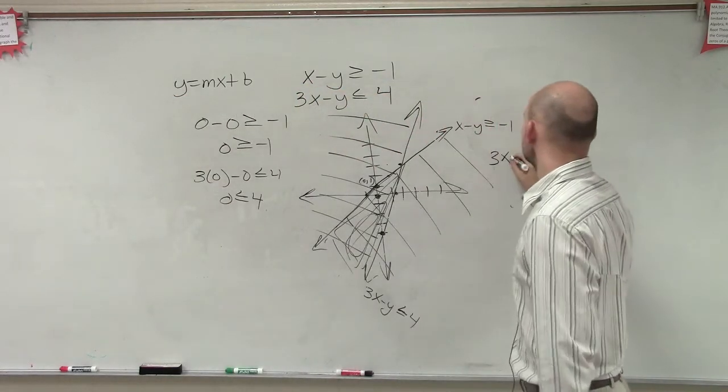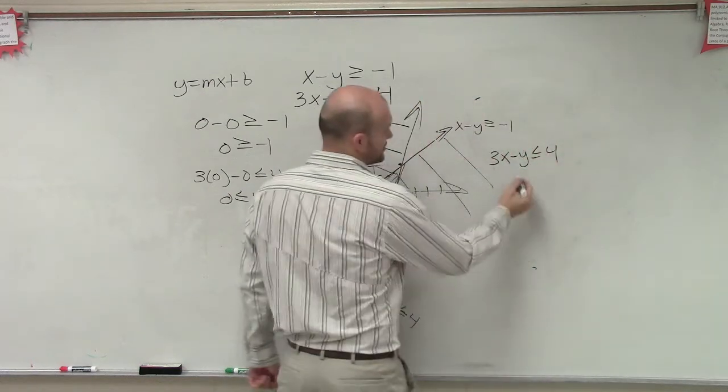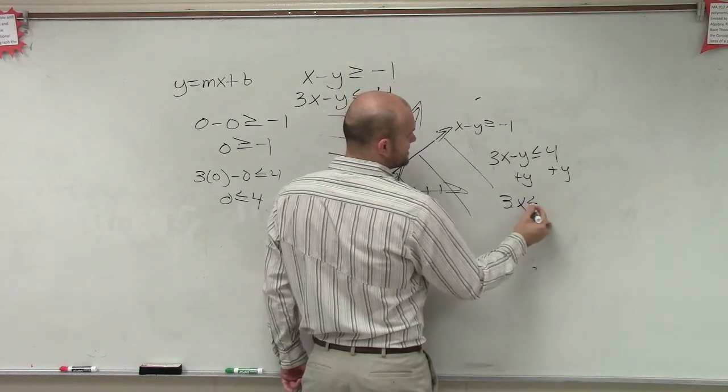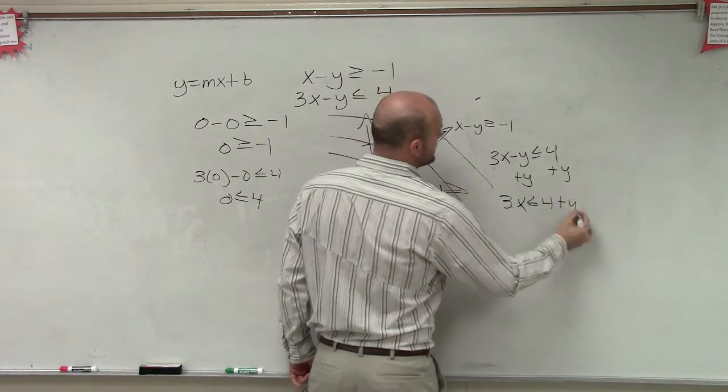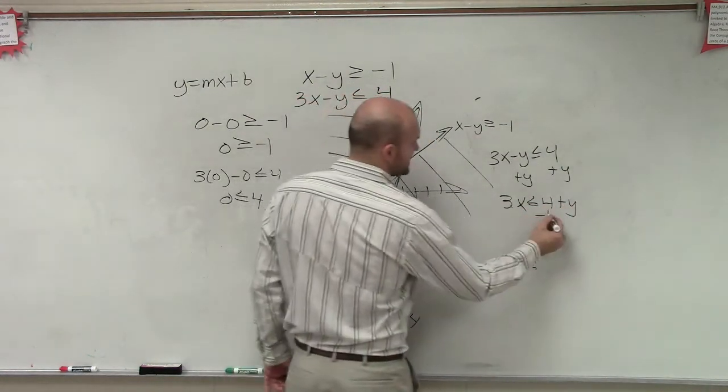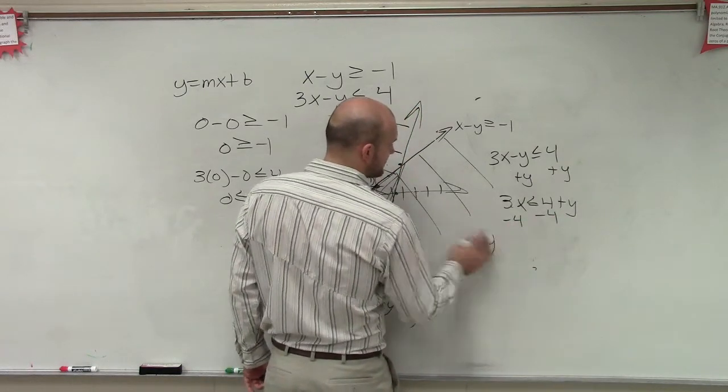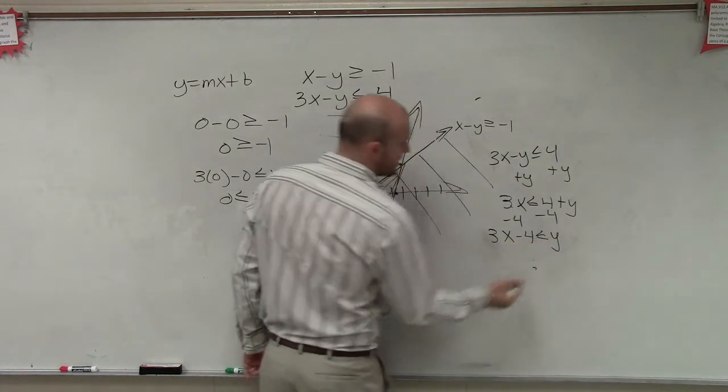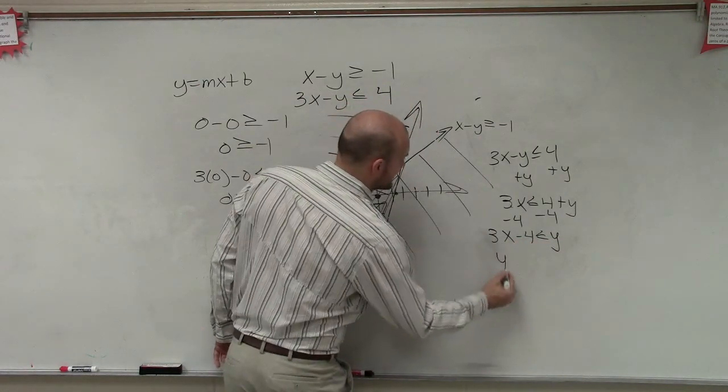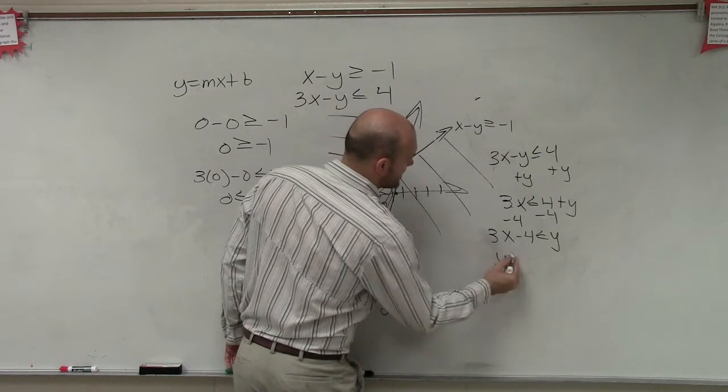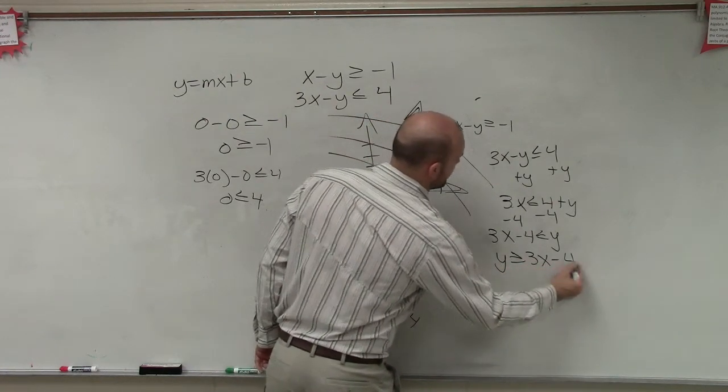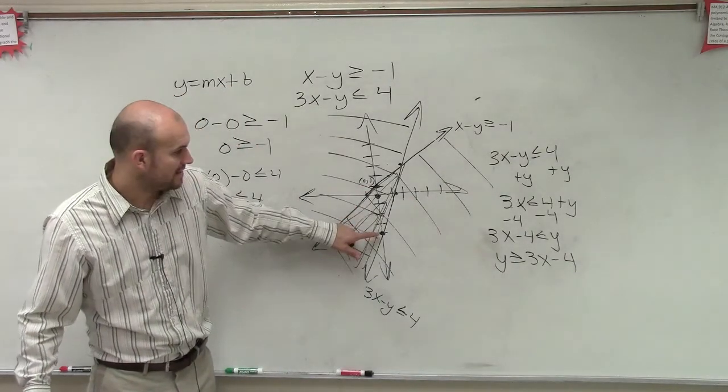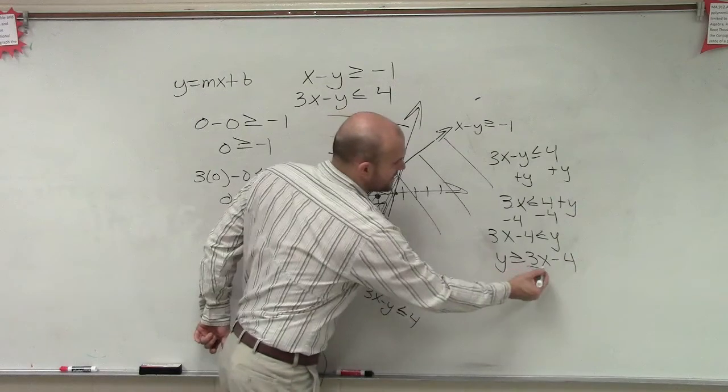So the way I would do this, what I would do is I would actually add the y to the other side. So you'd have 3x less than or equal to 4 plus y. And then to get the y by itself, I'd now subtract 4. So my answer would be y. All right. Let's look at it this way. So I'd have 3x minus 4 is less than or equal to y. Or I could rewrite that as y is greater than or equal to 3x minus 4. Now, how do you graph that? You go down 4, right?